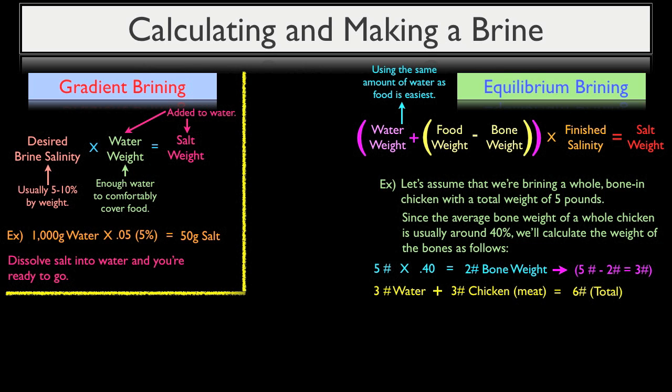Now, remember, your salt range, as we talked in our previous video, will be about 0.5% on the low side, 1% on the high side. So to achieve this 1% salt content in my finished product, I'm going to multiply the combined weight of the water and the chicken, just the flesh, not the bones, of 6 pounds by 0.01, or 1%, to get 0.06.